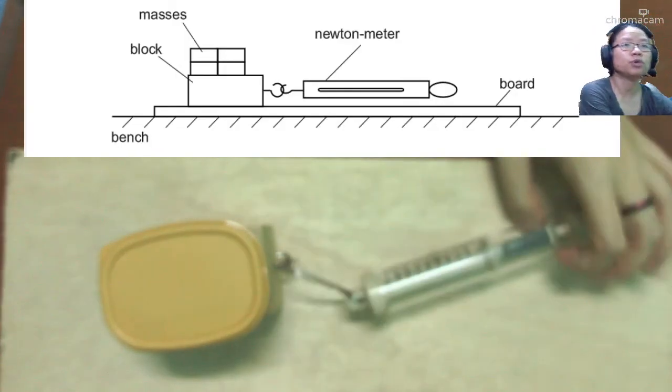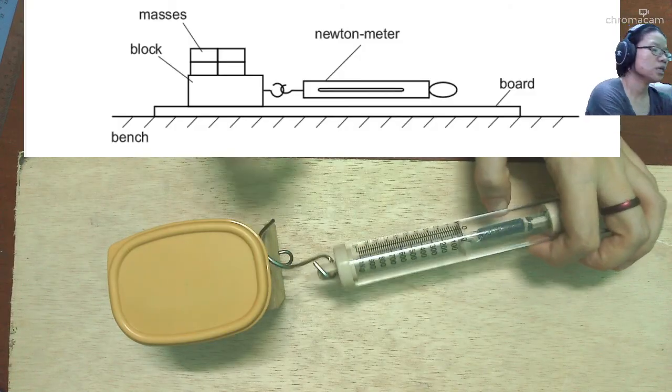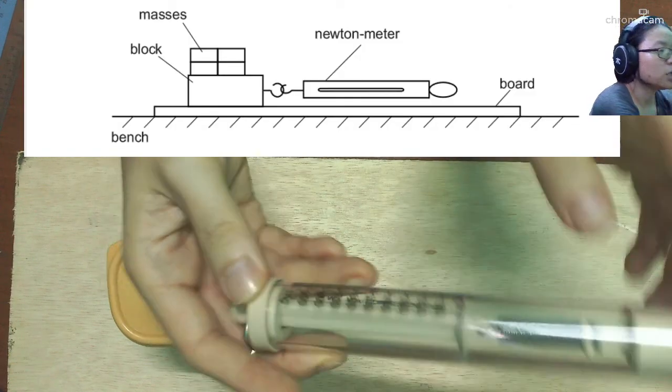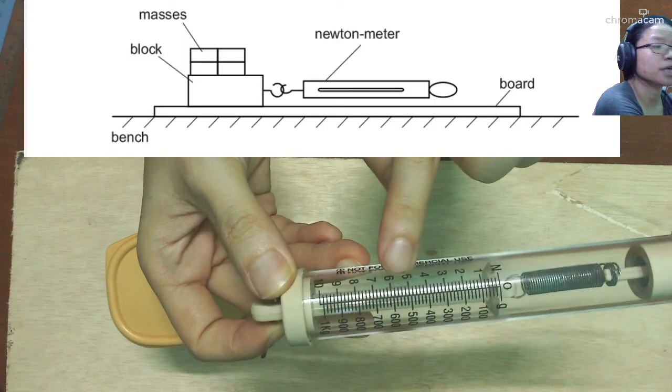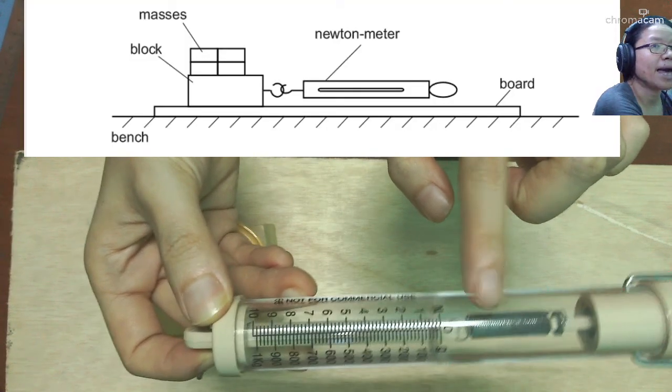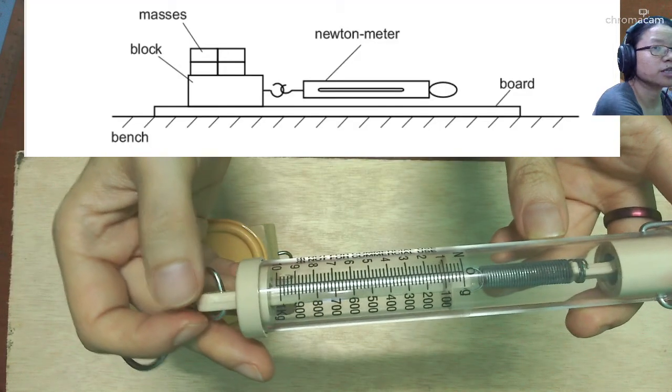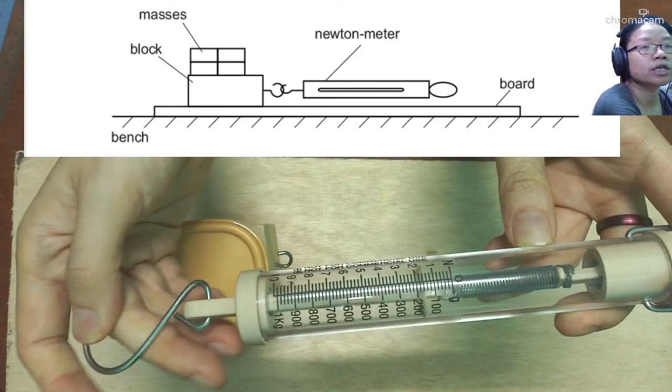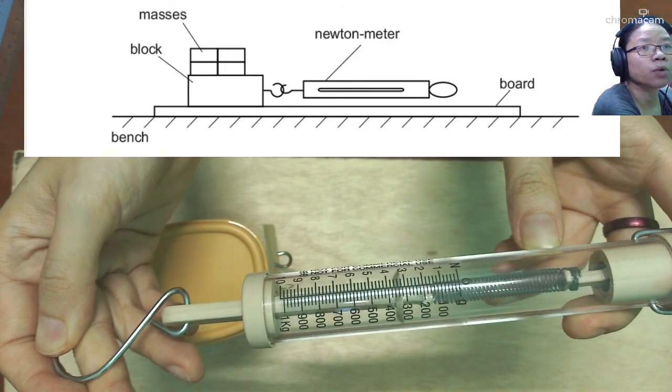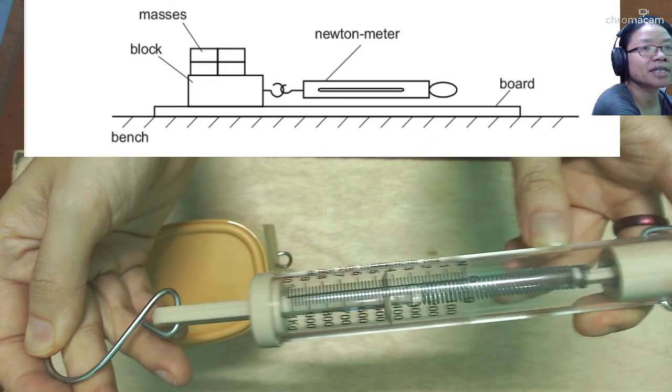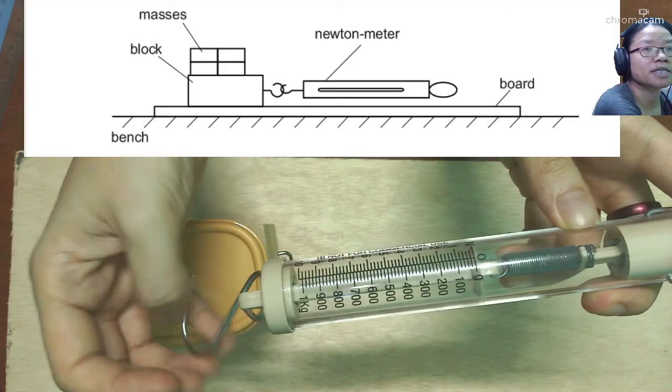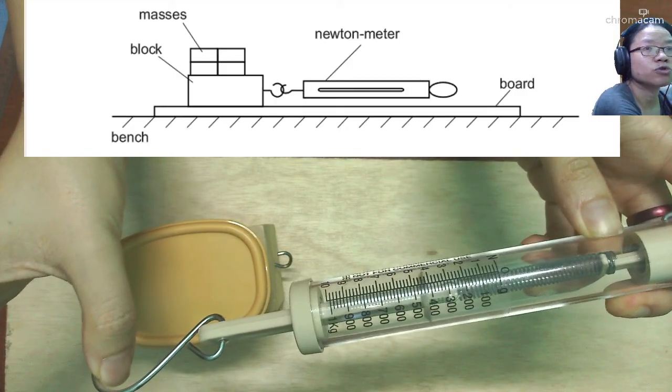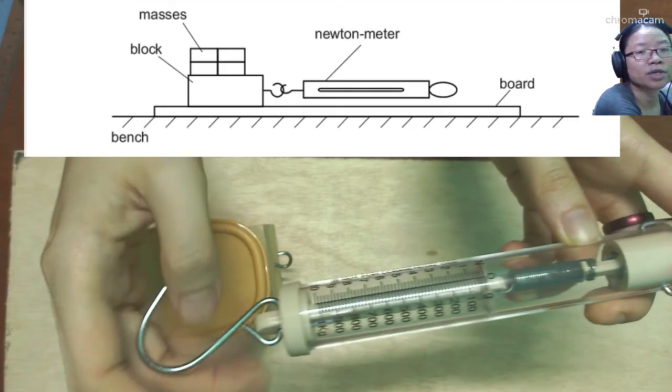The other new equipment would be this Newton meter. So this Newton meter works like a spring. You can see that there's a spring inside here. And as we drag the spring, the reading will be at where the line is, this marker. So when there's no dragging, the marker is at zero. When I apply a force to drag, it will have a certain reading.